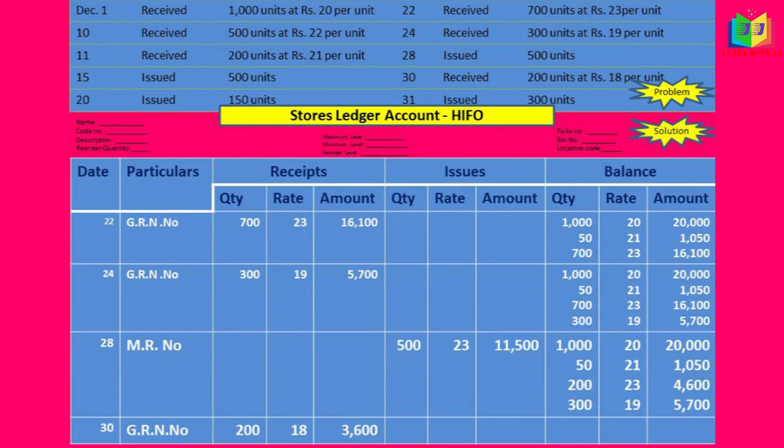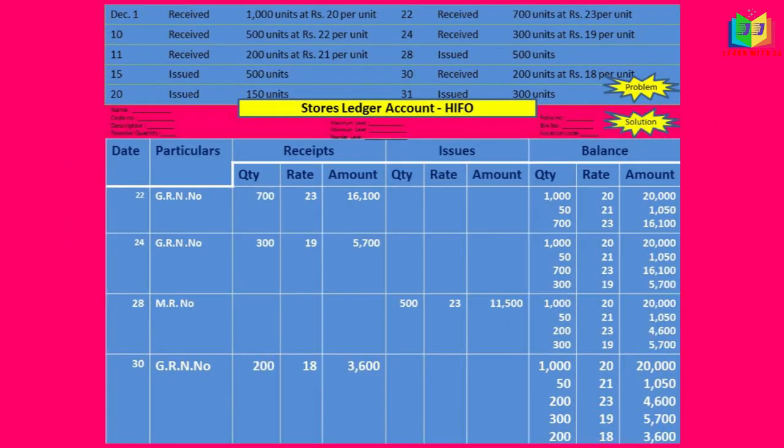On the 30th we have received, so I will write it in the receipts column: 200 units at the rate of 18 per unit, giving 3,600. In the same way I will write it in the balance column under the 300 units.